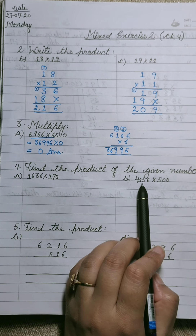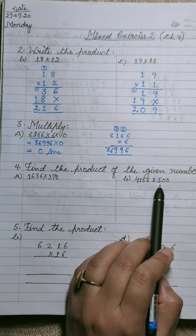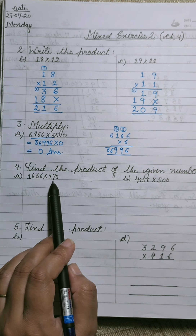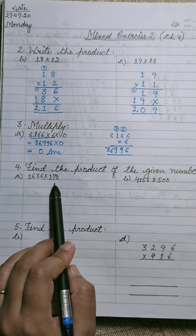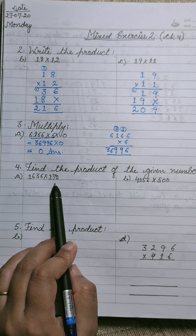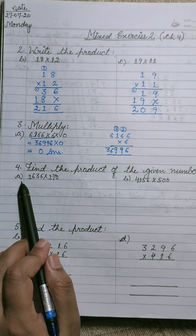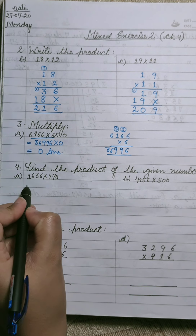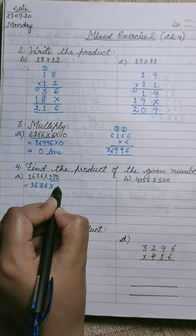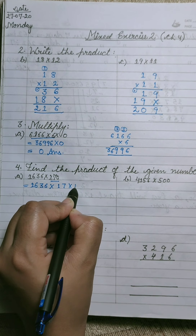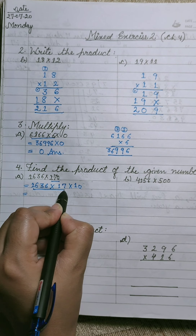Similarly, for 4156 multiplied by 500, split 500 as 5 into 100. And split 170 as 17 into 10. If it is just 17 with no zero, do not split — multiply directly. Note this point. For part A, split 170 into 17 into 10, and the next step is to multiply.